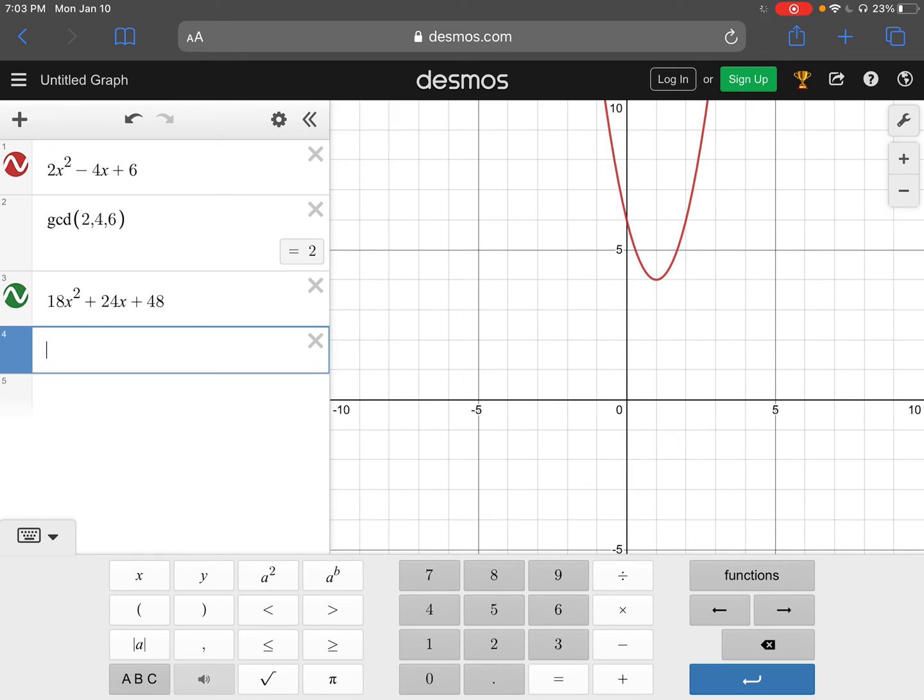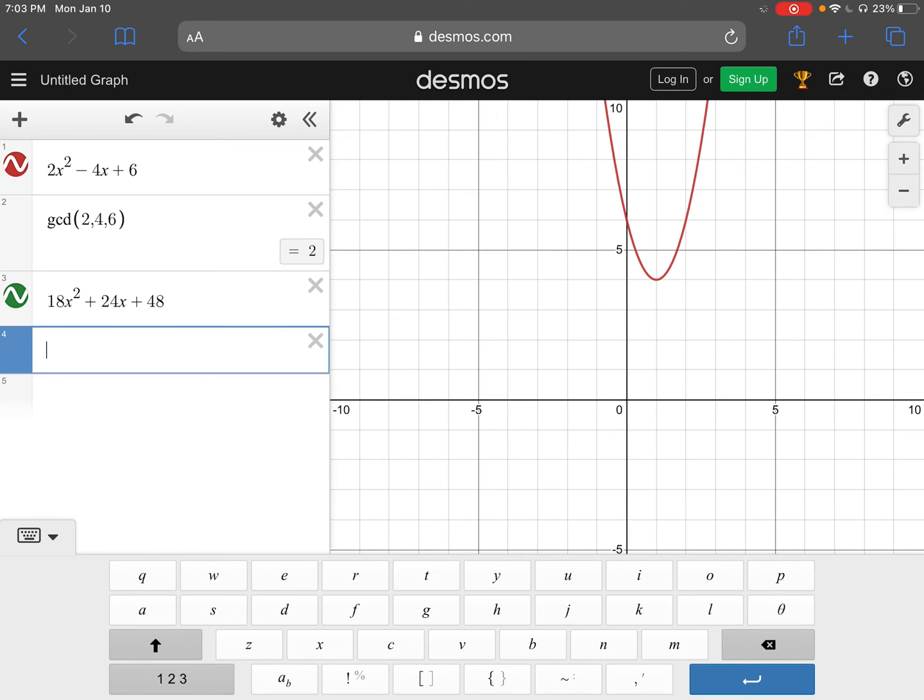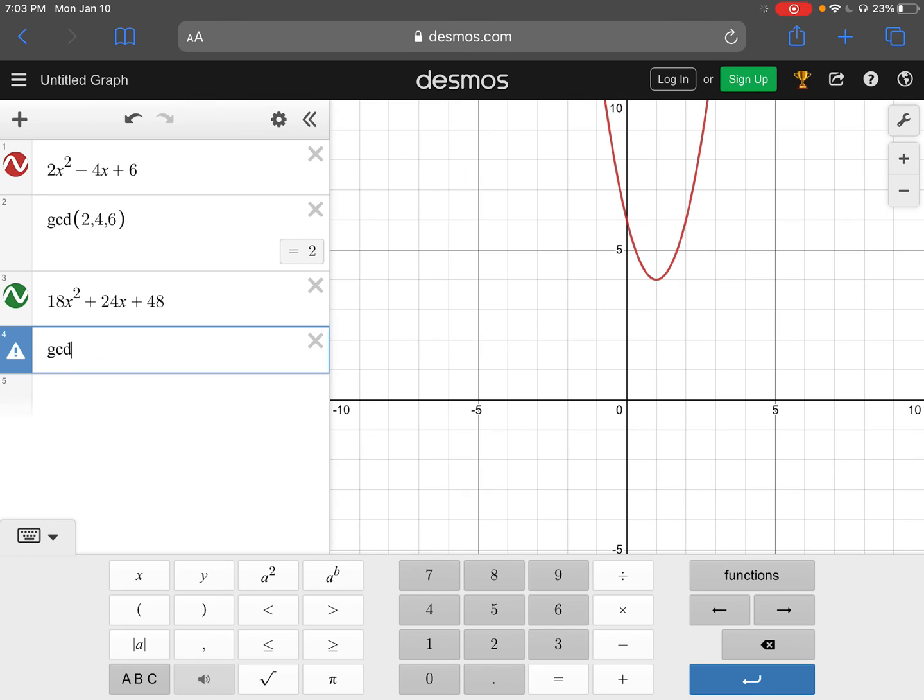If you want to know the greatest common factor of that, you're just going to type into Desmos GCD, parentheses. The first coefficient is 18, comma. The second coefficient is 24, comma. The third coefficient is 48.